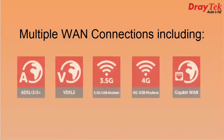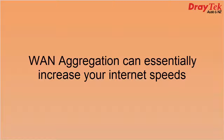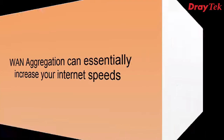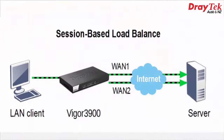WAN aggregation allows multiple WAN connections, which can be ADSL, VDSL, Ethernet WAN or 3G and 4G, to be aggregated. This will essentially increase your internet speeds by utilizing the session-based load balance feature in the router.